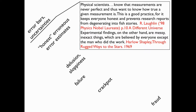Error bars are basically defining how well you know a measurement — how well you've measured something. If you give a number, you have to know how uncertain that number is. Otherwise, you're talking about fish stories — how big is a fish that you've just caught? Without error bars, without uncertainties, measurements make no sense whatsoever.